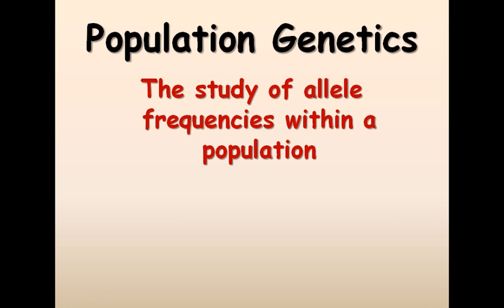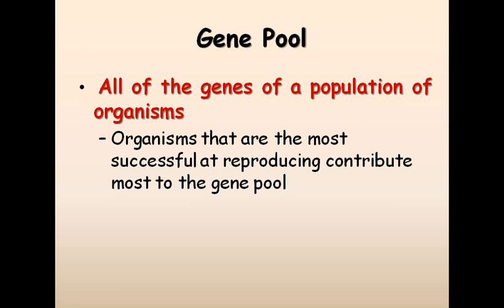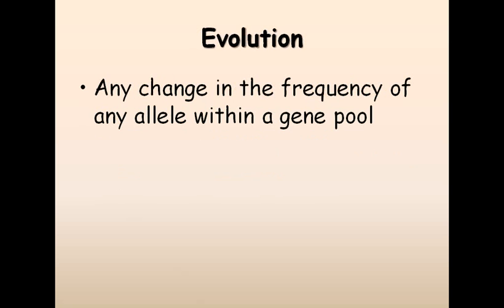The first concept is the gene pool. All of the genes of a population of organisms are called the gene pool. All the genomes present in the whole organisms of a population are combined together to produce the gene pool. Organisms that are most successful at reproducing contribute most to the gene pool because they survive for many years and provide their genetic makeup to it.